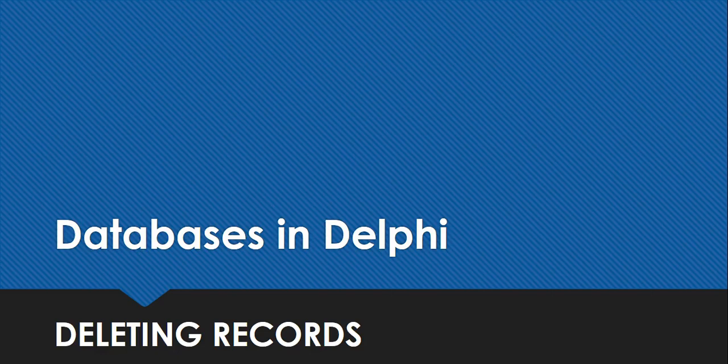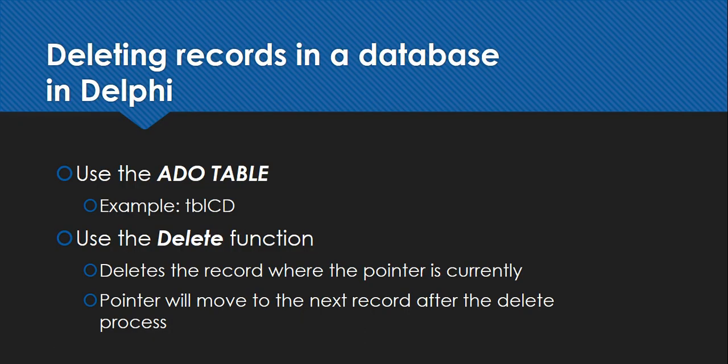In this video we're going to look at how we can make changes to a database from the Delphi side. In our previous two videos we looked at how we can insert a new record and how we can change current records. Here we're looking at how we delete records we don't want in our database anymore. Deleting a record is actually the easiest thing to do - there's really just one step: you use the delete function.